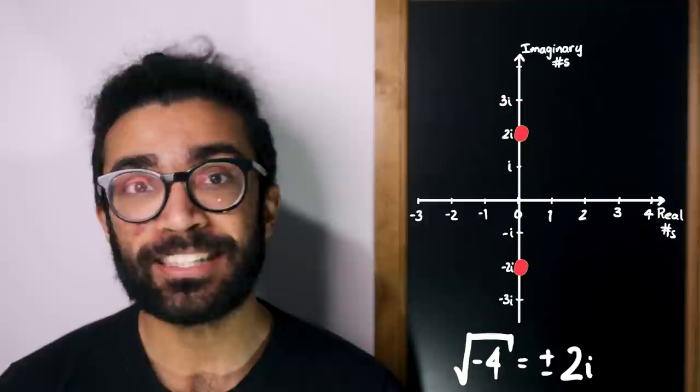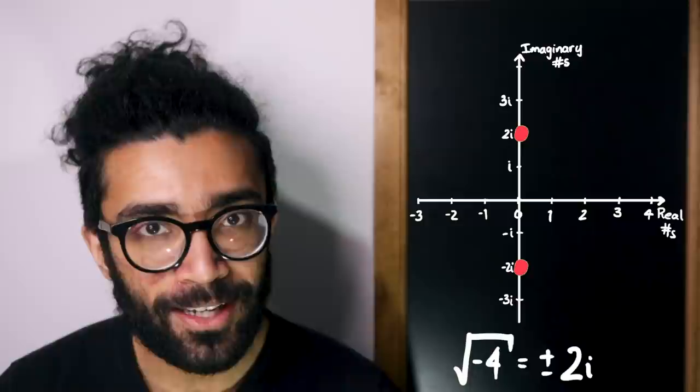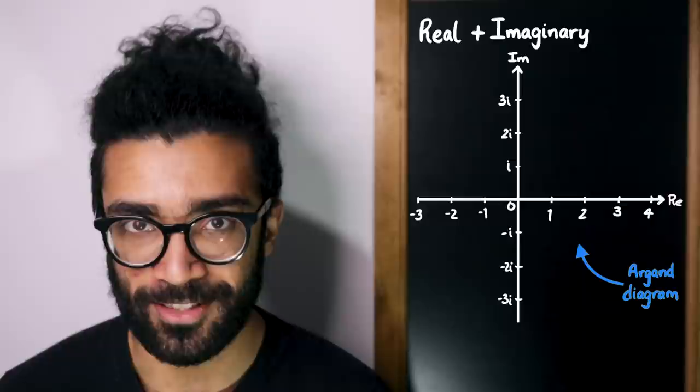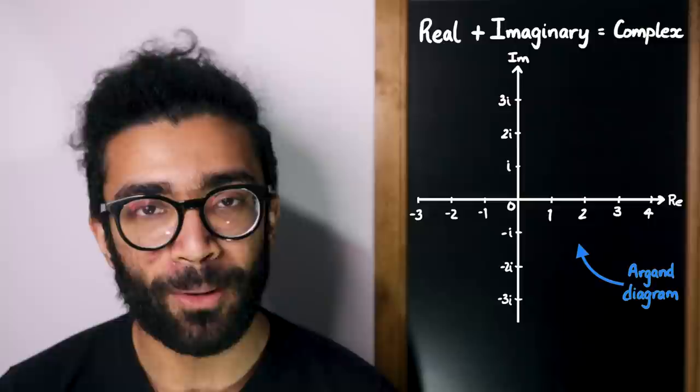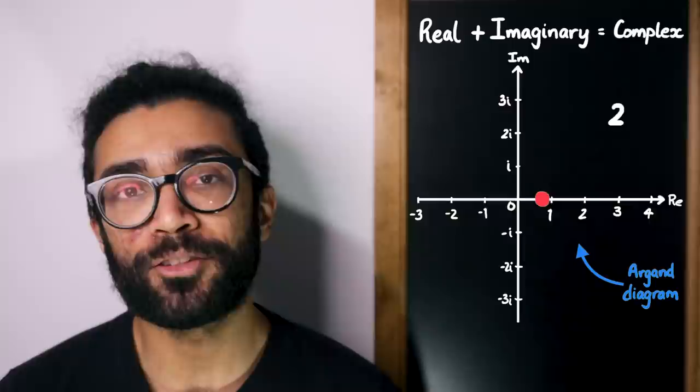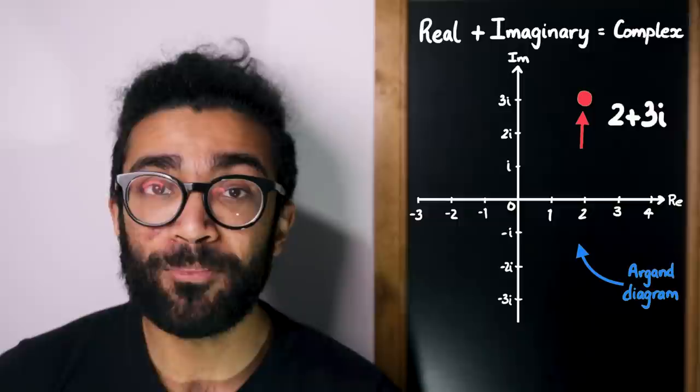And we can also represent numbers that are a blend of real and imaginary numbers by displaying them on this kind of Argand diagram, as it's known. We create a mixed number, a complex number, by adding a real part and an imaginary part. So for example, the number 2 plus 3i is a complex number represented on the Argand diagram like this, and another complex number, minus 3 plus 2i, can be represented like this, for example.